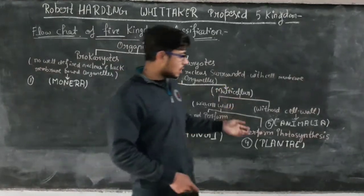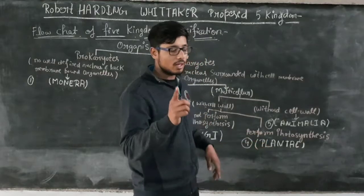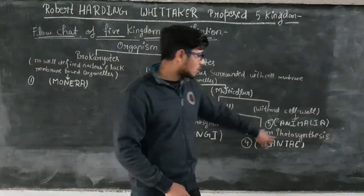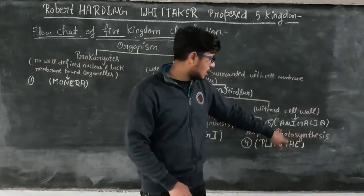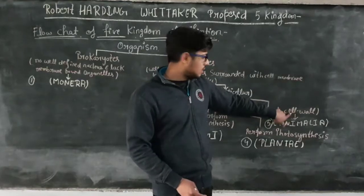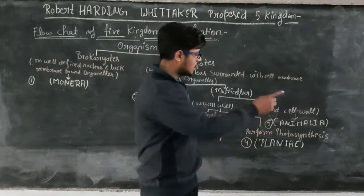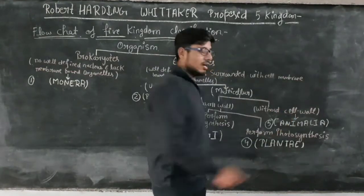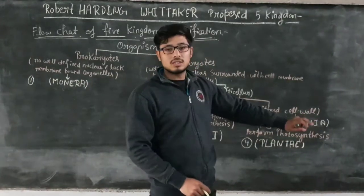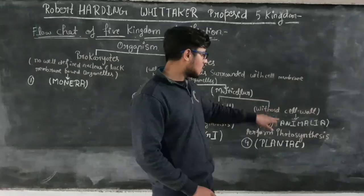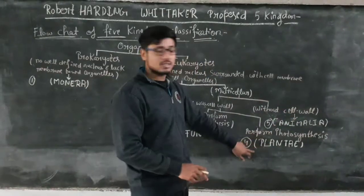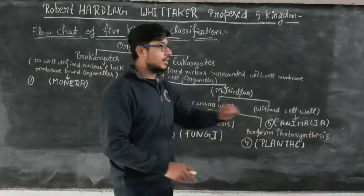Those organisms — or rather, those plants — that perform photosynthesis are grouped under the plant kingdom. And the last group, without a cell wall, is called Animalia. Animals do not perform photosynthesis, and that is why they are included in the group without a cell wall.